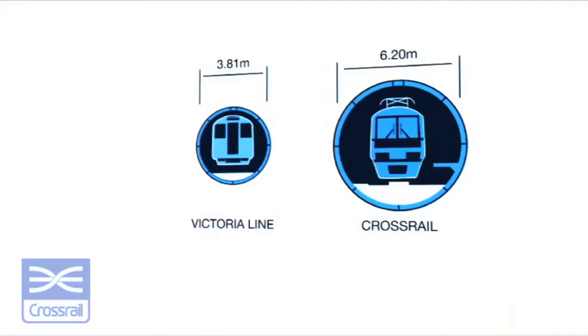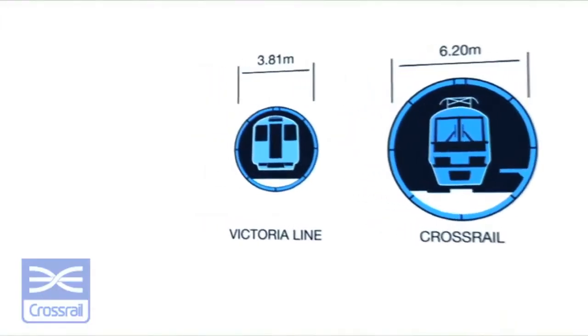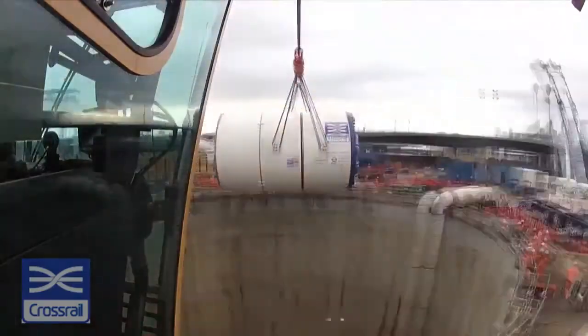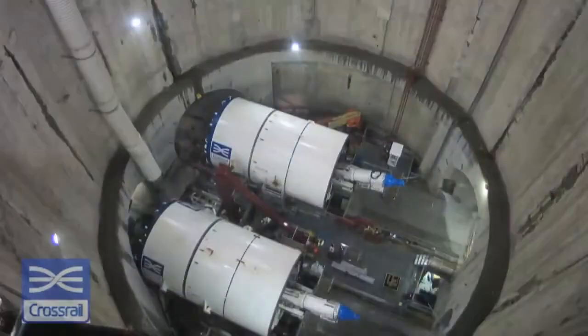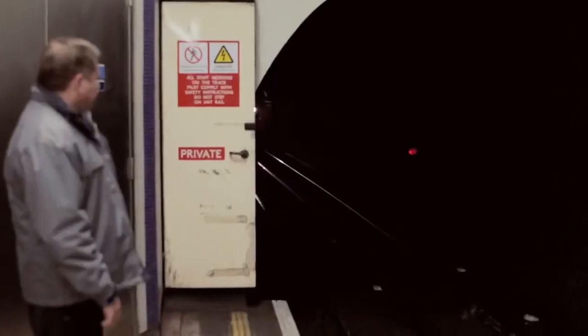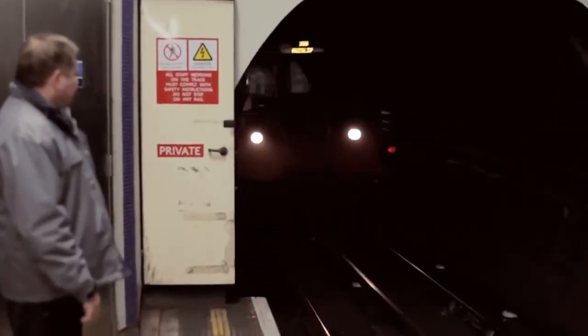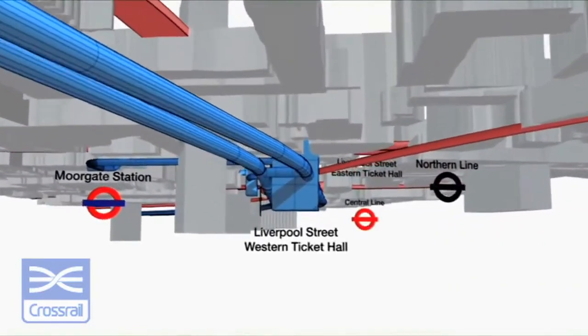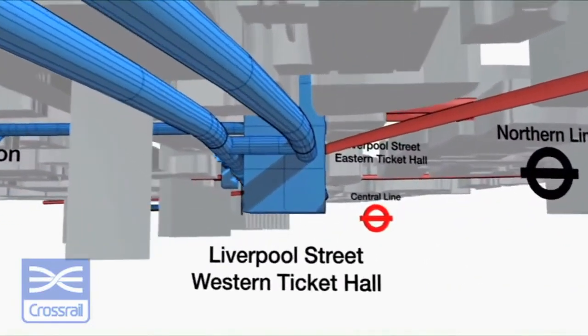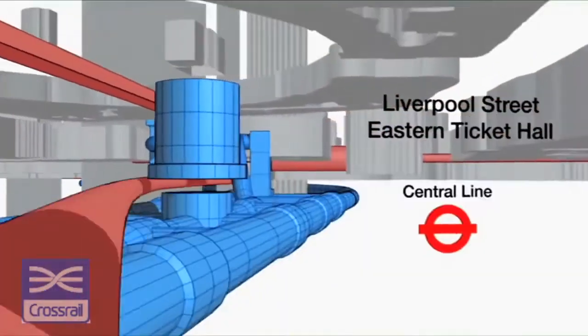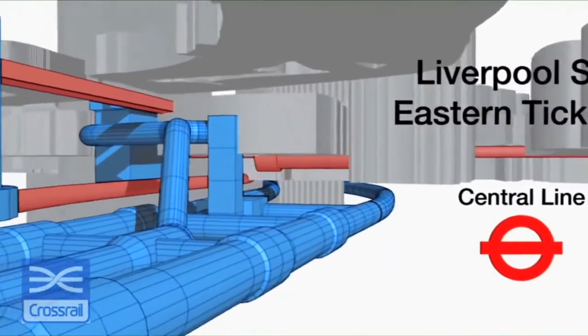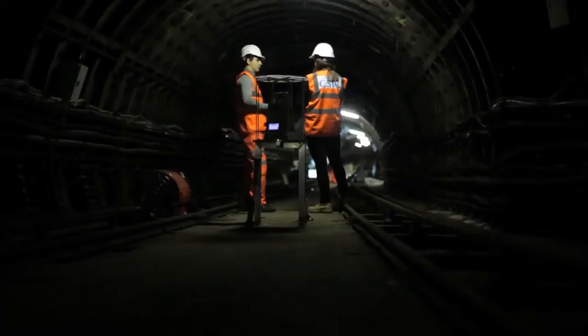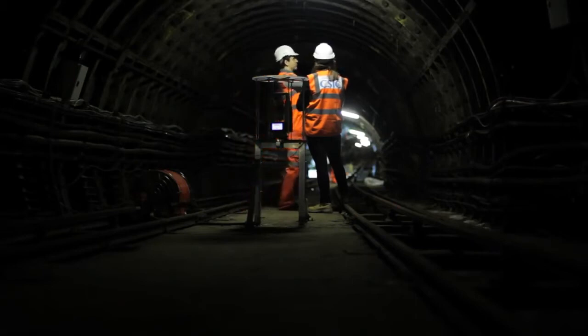One of the most important challenges is how it is possible to construct large tunnels underneath urban infrastructure without causing any distress to those buildings and other tunnels. At Liverpool Street Station there is one example of a very intricate part of the engineering of Crossrail, which involves constructing some very large new tunnels directly underneath other tunnels, including the old Post Office Railway tunnel.